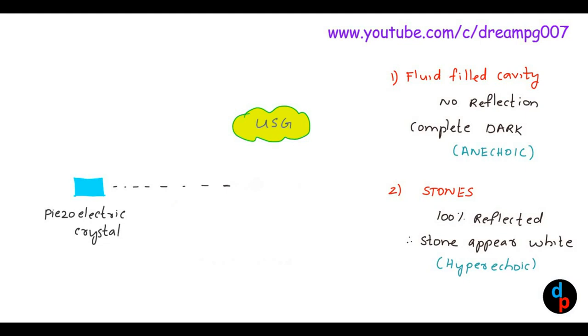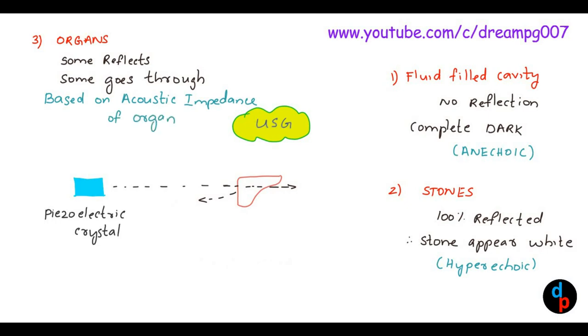Suppose if that is an organ, some of the ultrasound waves will get reflected and some will go through. The amount of ultrasound waves that get reflected will depend upon the acoustic impedance of the organ. Acoustic impedance depends on the tissue density as well as the velocity of sound travel through the tissue.